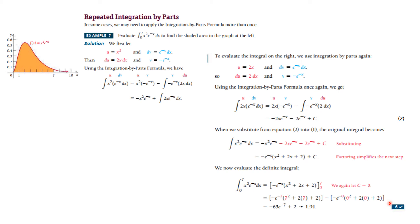In some cases we may need to apply Integration by Parts more than once. For example, in Example 7 we evaluate the definite integral from 0 to 7 of x² e^(−x) dx. We let u equal x² and dv is everything else. After applying the formula once, the resulting integral still contains x e^(−x), so we must use Integration by Parts again.